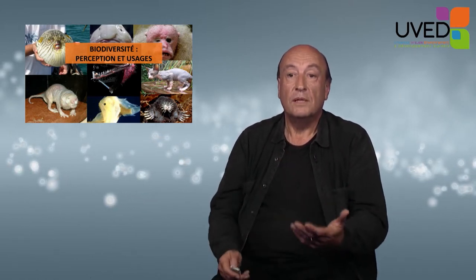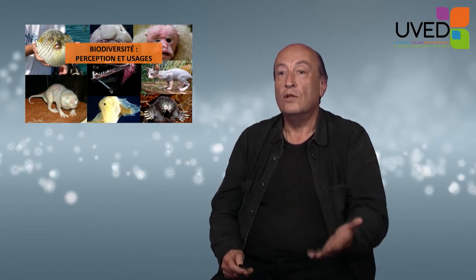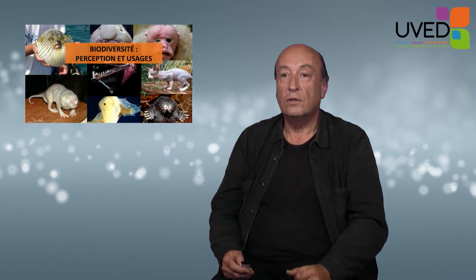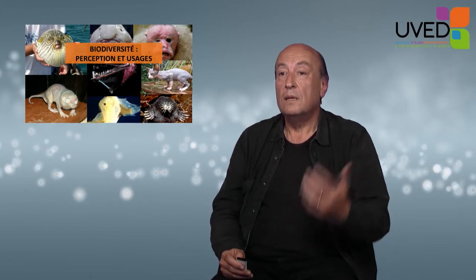Perception. We have found biodiversity a long time ago. It's not necessary to be sapient to differentiate species. A dog knows the difference between a cat and a mouse. There are species we've always known, but what do we do with that knowledge?